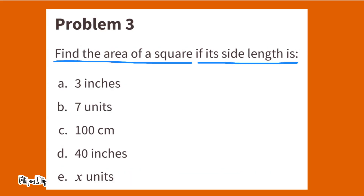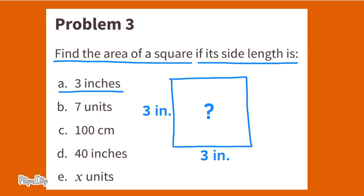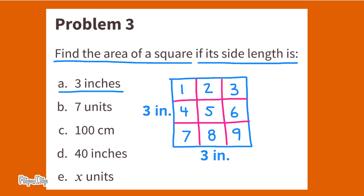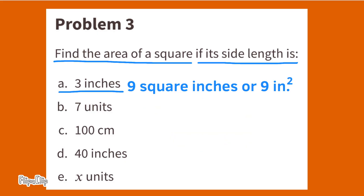Number 3. Find the area of a square if its side length is A, 3 inches. 3 inches times 3 inches equals 9 square inches. A square with side lengths 3 inches long would have an area of 9 square inches.